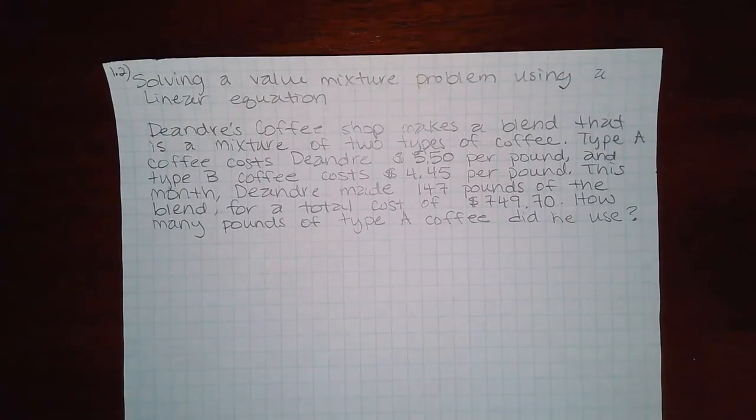And here we have solving a value mixture problem using a linear equation. So D'Andre's Coffee Shop makes a blend that is a mixture of two types of coffee.